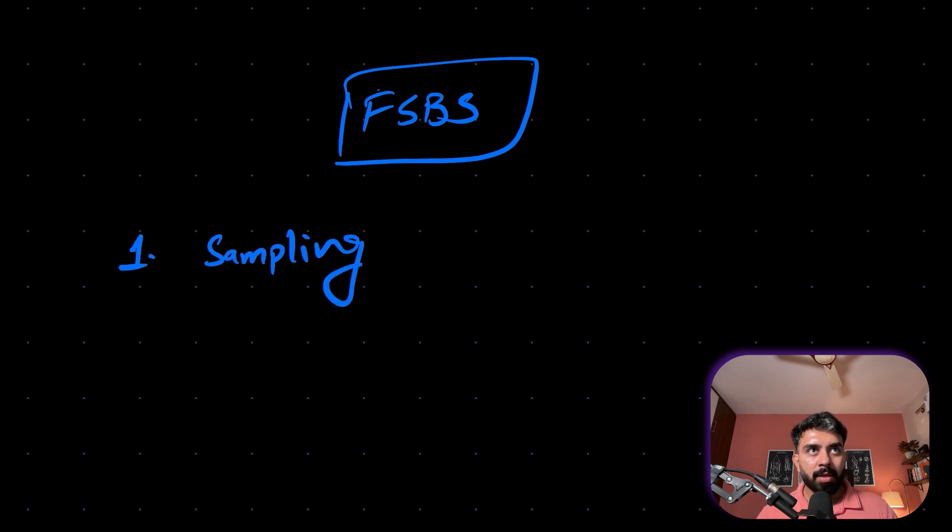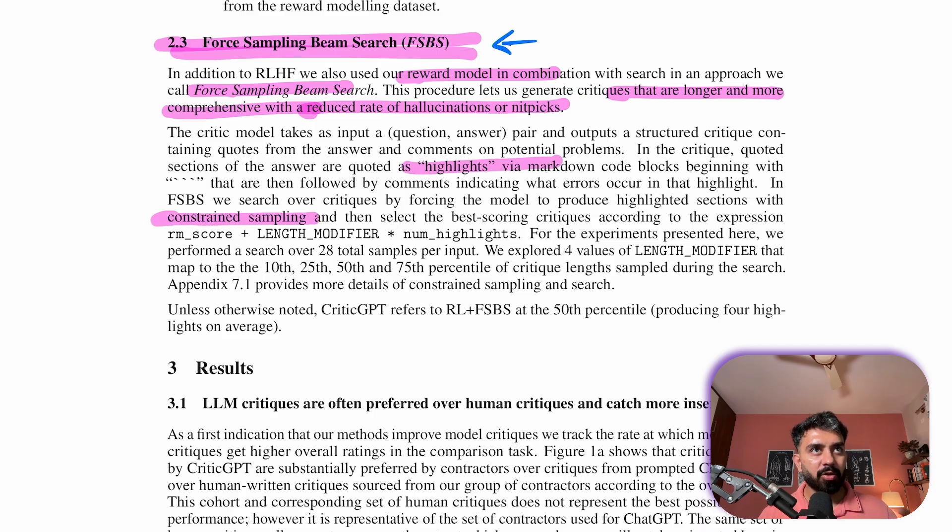So we can break down FSBS in three parts. First is the sampling. During critique generation, FSBS forces the model to produce highlighted sections of the input text that are quoted in the critique. This is done through constrained sampling where the model is encouraged to select text spans or code snippets that are likely to contain bugs or issues.